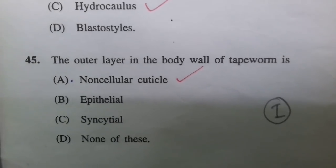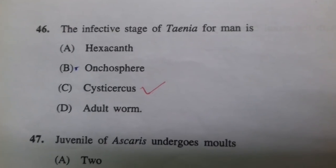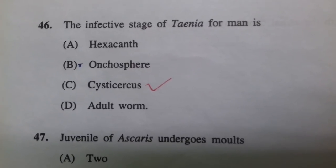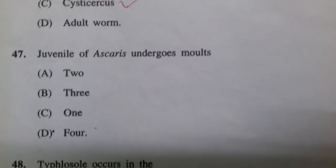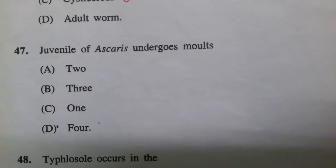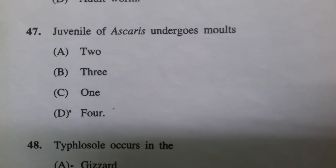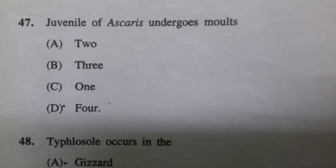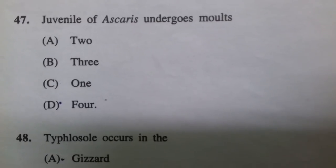The outer layer of the body wall of tapeworm is a non-cellular cuticle — and I answered this correctly. The infective stage of Taenia for humans is the cysticercus. The juvenile of Ascaris undergoes four molts during its life cycle.